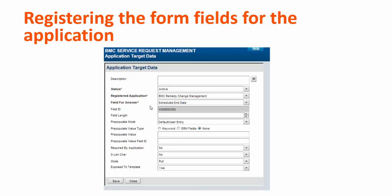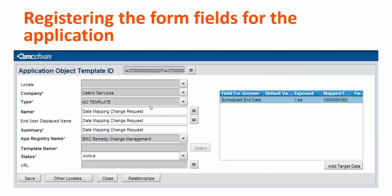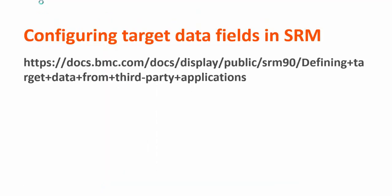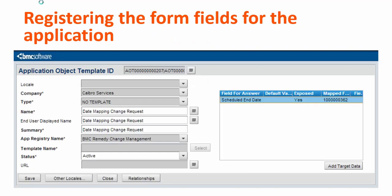Now we will take an example of the use case discussed earlier. In application target data, we will define the field. Select status, register application at change management, field for answer as scheduled end date, and other information. For more information on this topic, please refer to our online documentation for defining target data for third party applications.